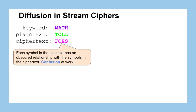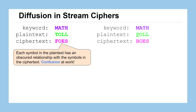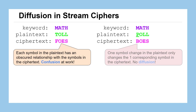Each symbol in the plaintext has obscured the relationship with the symbols in the ciphertext — that's confusion at work, a substitution process we're familiar with. But if we change a single character in the plaintext, changing 'toil' to 'poil', when we encrypt using the keyword 'math' we get the ciphertext 'boes'. That one symbol change in the plaintext has only changed one symbol in the ciphertext, specifically the corresponding symbol in the same exact position. This is a case where there is zero diffusion in this process.